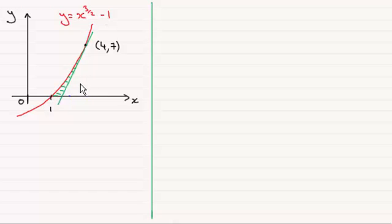Now the question says hence, so it relies on the previous part of the question. In the previous part of the question we found the integral of x to the power 3 upon 2 minus 1 between the limits x equals 1 and x equals 4. In other words, what that gave us was this area underneath the curve, the red curve here, to this blue line here where x equals 4.